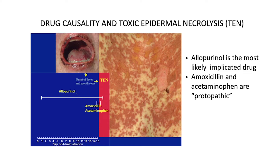It is important to draw out the timeline of all drugs given and when they were started in relation to the onset of a drug reaction. In this example, allopurinol was the cause of toxic epidermal necrolysis (TEN); however, amoxicillin and acetaminophen had been started to treat early signs and symptoms of TEN and were falsely implicated as potentially causal drugs. This is known as the protopathic effect.